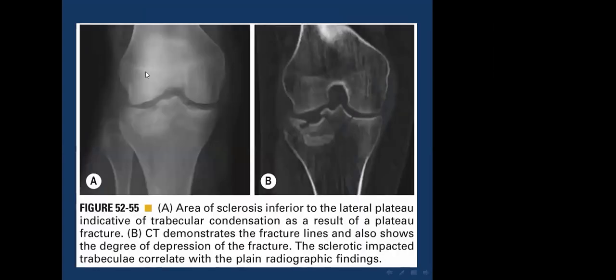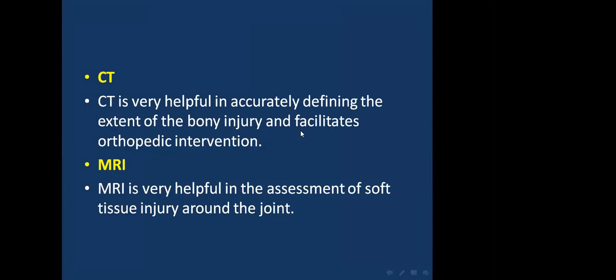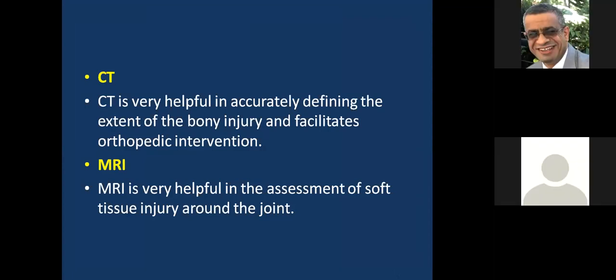A line drawn from the lateral femoral condyle should meet the lateral tibial plateau or within 5 mm. If disrupted, this indicates a tibial plateau fracture. A subtle sign on X-ray shows trabecular condensation and bone sclerosis, but with CT it is more obvious. CT is very helpful in accurately defining the extent of bone injury and facilitating orthopedic intervention. MRI is very helpful in the assessment of soft tissue injury around the joint.